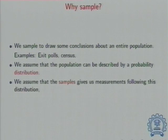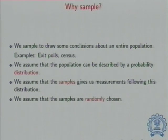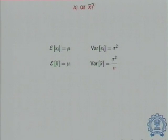The population can be described by probability distributions. Samples give us measurements following a distribution, and we assume that the samples are randomly chosen. These things go back to that coin toss — you knew the set of outcomes, you could not predict the precise outcome. So now: should I be looking at individual measurements or should I be looking at the arithmetic mean? That x̄ is my notation for an arithmetic mean.